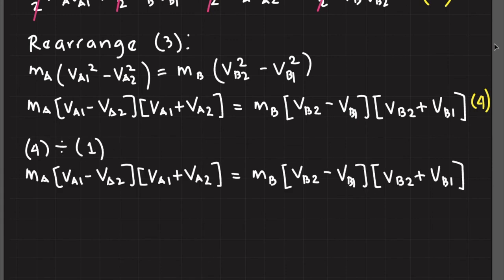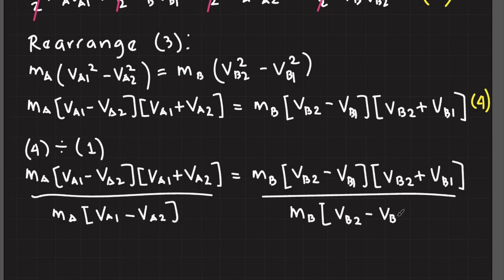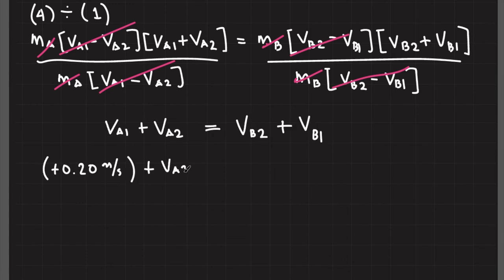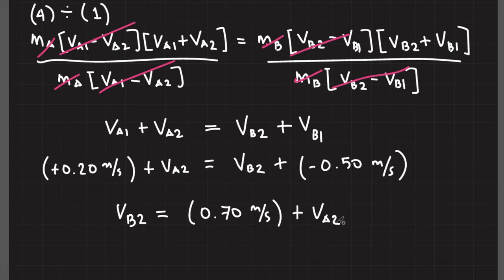Then divide equation 4 with equation 2. Note that V sub A1 and V sub B1 are given. Therefore, V sub B2 equals 0.7 meters per second plus V sub A2. Let's call the resulting equation as equation 6.